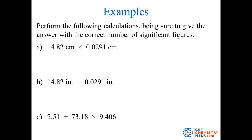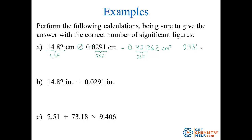14.82 times 0.0291 — I put that in my calculator and get 0.431262, with units of centimeters squared. When we multiply, we use the fewest sig figs. 14.82 has four significant figures; 0.0291 has three significant figures because leading zeros are never significant. So our answer can only have three significant figures, and 0.431262 rounds to 0.431 centimeters squared.